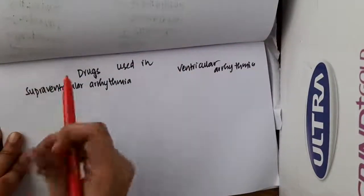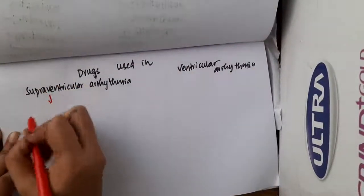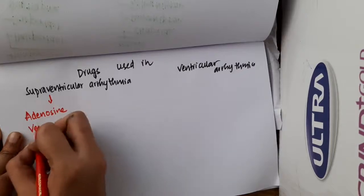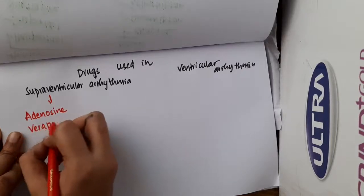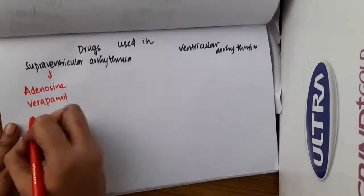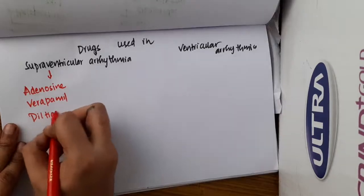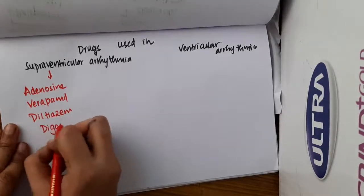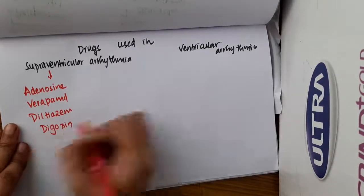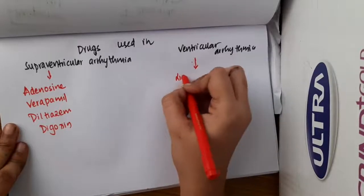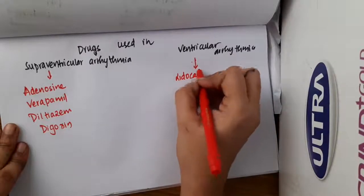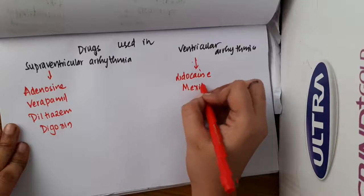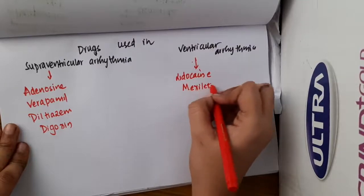If you see the drugs used in supraventricular arrhythmias, these include adenosine, verapamil, diltiazem, and digoxin. Whereas those which are used in ventricular arrhythmias are lidocaine and mexiletine.